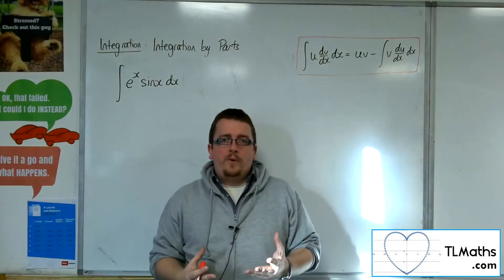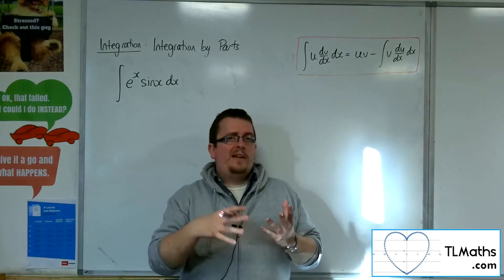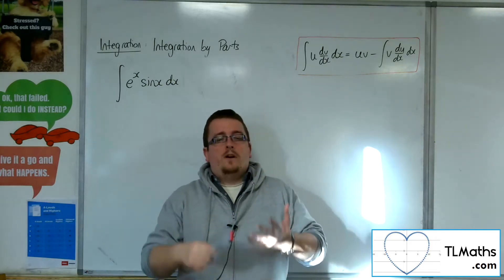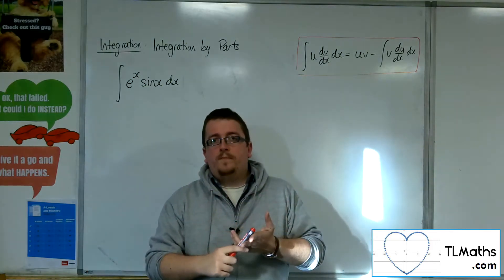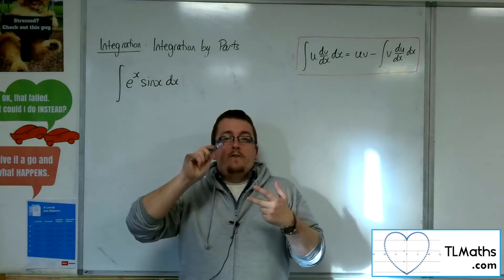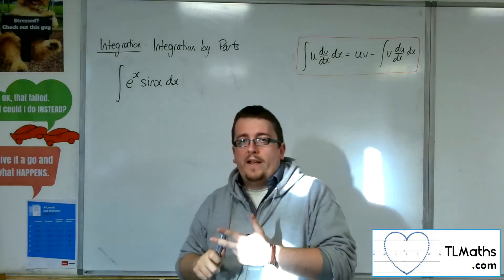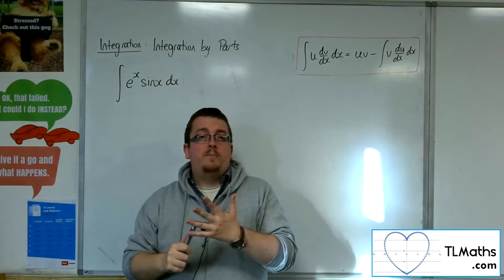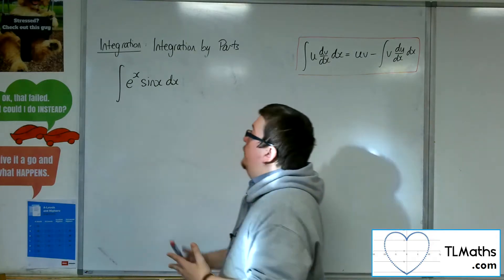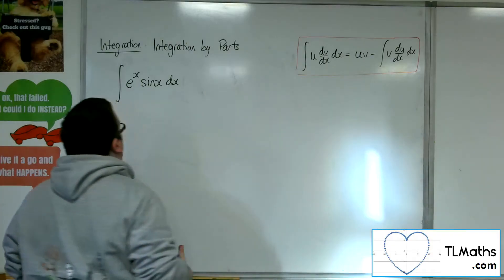Now, all the examples that we've had so far in using LATE have used either logarithms or algebra. What if there are no logarithms, there is no algebra, and we just have trigonometry and exponentials? So this is what that example would look like.